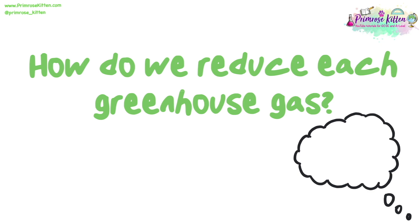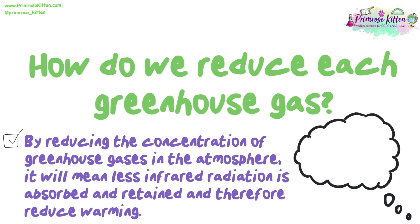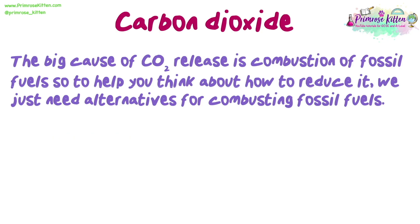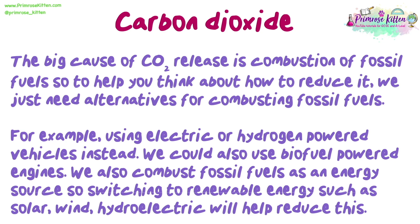How do we reduce each greenhouse gas? By reducing the concentration of greenhouse gases in the atmosphere, less infrared radiation is absorbed and retained, therefore reducing warming. The big cause of CO2 release is combustion of fossil fuels, so we need alternatives. For example, using electric or hydrogen-powered vehicles, biofuel-powered engines, or switching to renewable energy such as solar, wind or hydroelectric.